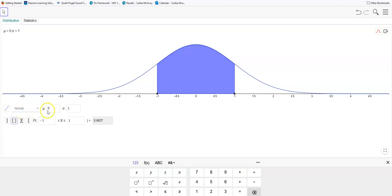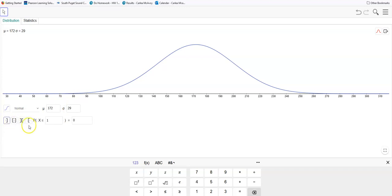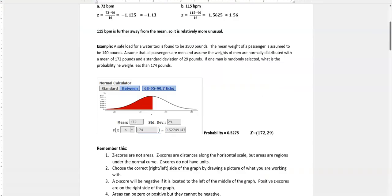It's still normal distribution, just not standard because it's not zero and one. We have 172 for our mean, and our standard deviation was 29. We were looking for what's the probability that somebody is less than 174 pounds, and we get 0.575 or 0.53. Different calculators may give you something slightly different, but it should be close enough to work for you. So that's how you can use GeoGebra to do that.